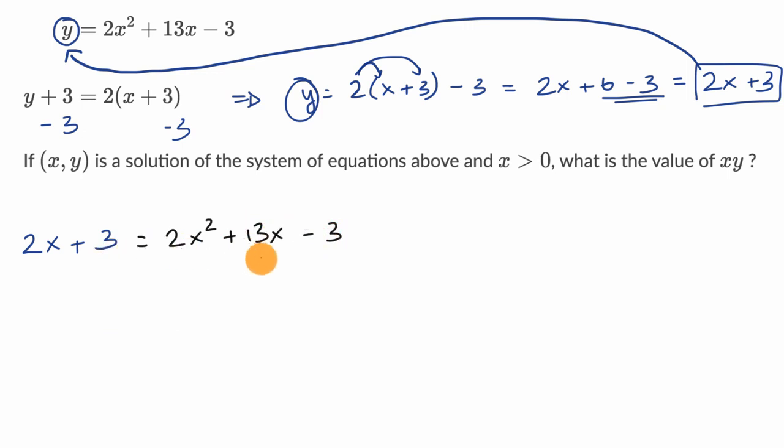Now this looks really complex, but we're just dealing with a quadratic if we can just combine terms onto one side. So let's get rid of the two x and the three on the left-hand side. So I'm going to subtract that from both sides. I'm going to subtract a two x from both sides.